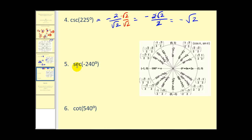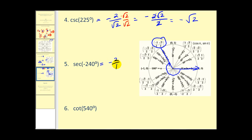Next, we have the secant of negative 240 degrees, so we go clockwise. There's negative 180, and we go negative 60 more to the terminal side. We use this point to determine the value. Remember, secant theta is the reciprocal of cosine theta, and cosine theta equals x on the unit circle. So the reciprocal of negative one-half is negative two over one, which equals negative two.